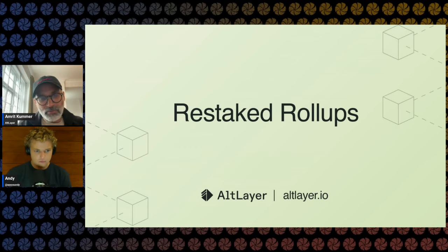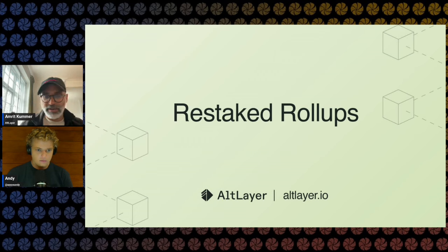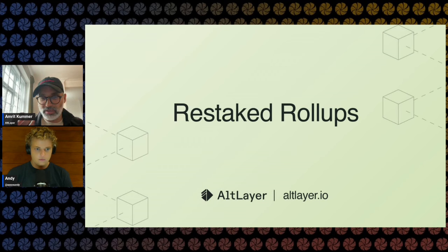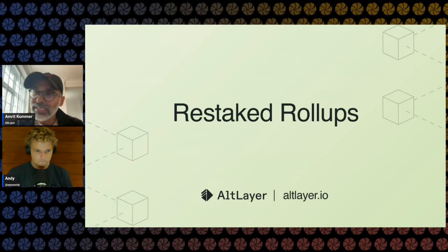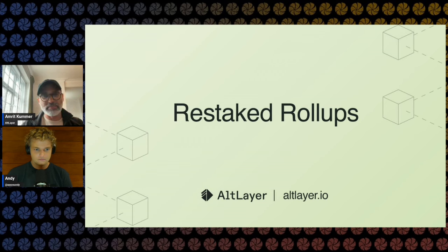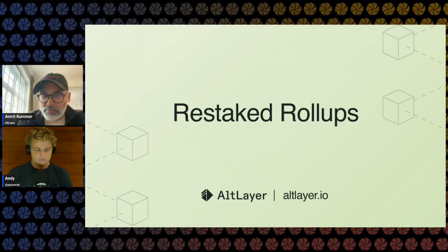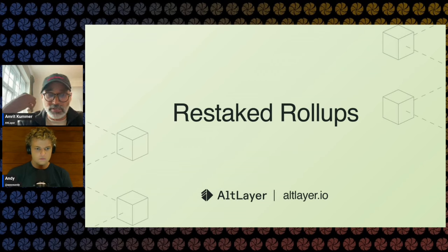One common piece of feedback we were getting from clients was: it's good that you manage the services for us, but there's no way for us to get our community involved. You are the vendor running our rollup. There's no way for the broader community to get involved in running and managing it. This was the initial motivation behind something that makes the system more decentralized — restake rollup brings restaking to rollups, as simple as that. Basically, bring Eigenlayer's restaking mechanism to rollups and offer certain services.